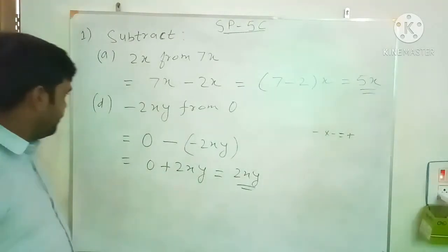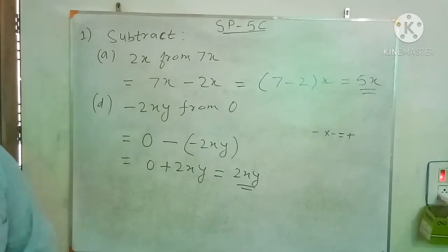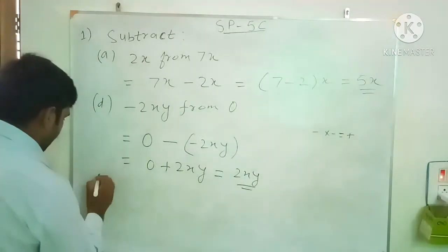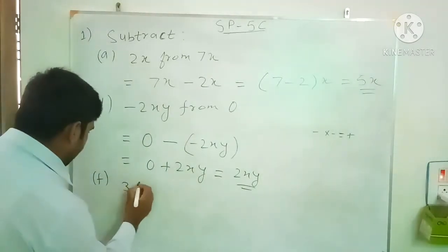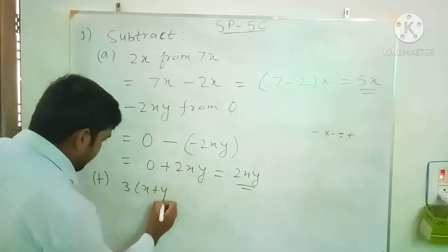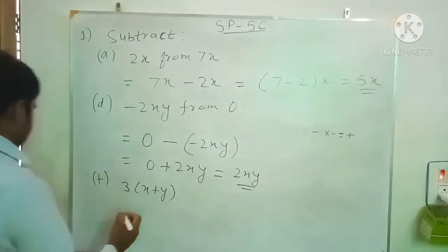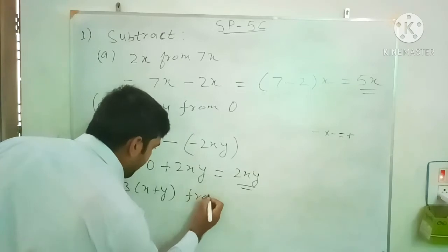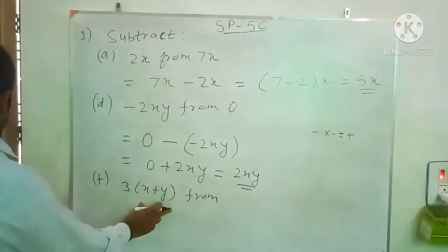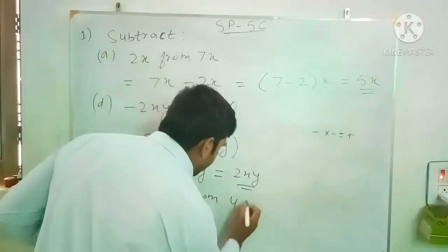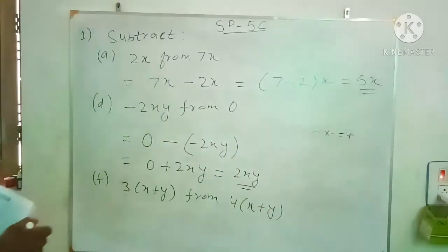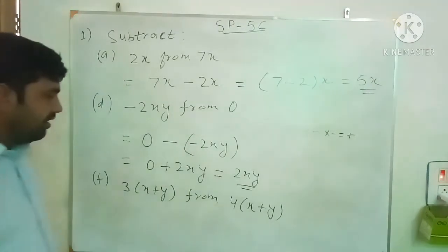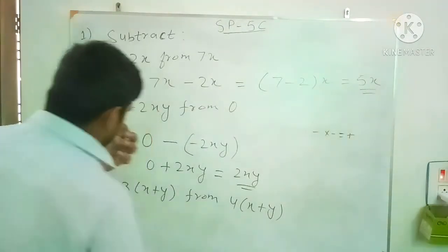So 0 plus 2xy gives you 2xy. Now we do the last question, 1f. We have to subtract 3 times x plus y from 4 times x plus y.